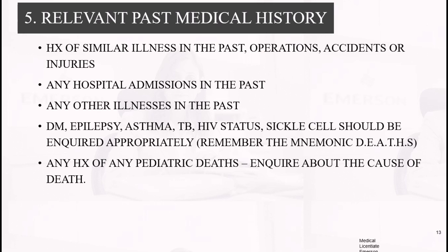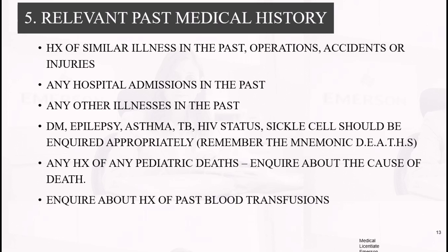When documenting the DEATH mnemonic on the patient's file, rather than writing out the full word 'DEATH,' it's better to abbreviate — for example, DM for diabetes mellitus, AP for asthma. This avoids appearing lazy while keeping things concise. Also ask about any history of pediatric deaths in the family — inquire about the cause and age. Ask about any history of past blood transfusions.